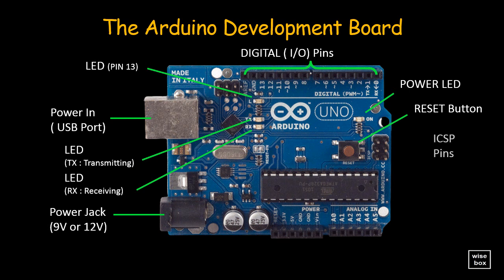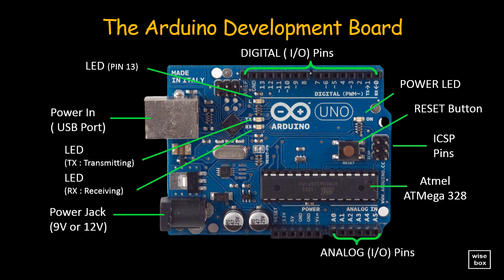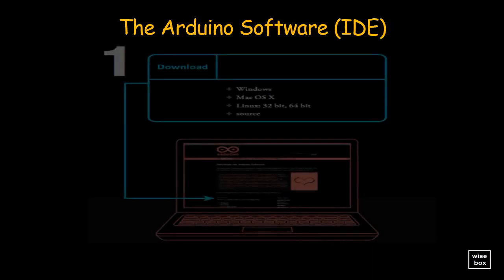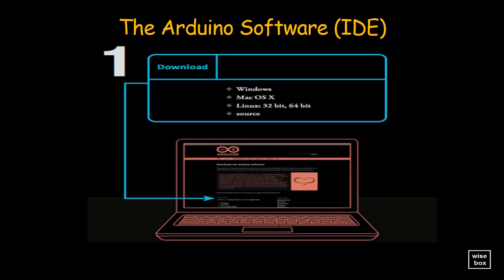The ICSP pins are for in-circuit serial programming, which is used if you want to bypass the bootloader. The analog input/output pins are used for analog inputs and outputs, and the power pins are used for power, ground, and reset. Now that we already know the Arduino hardware, let's download the Arduino IDE software.